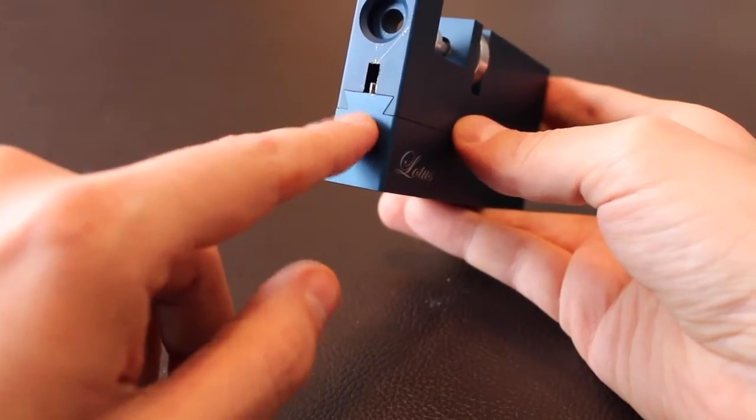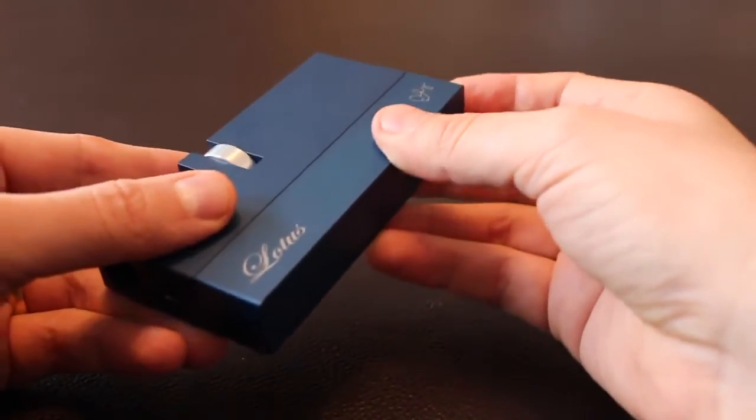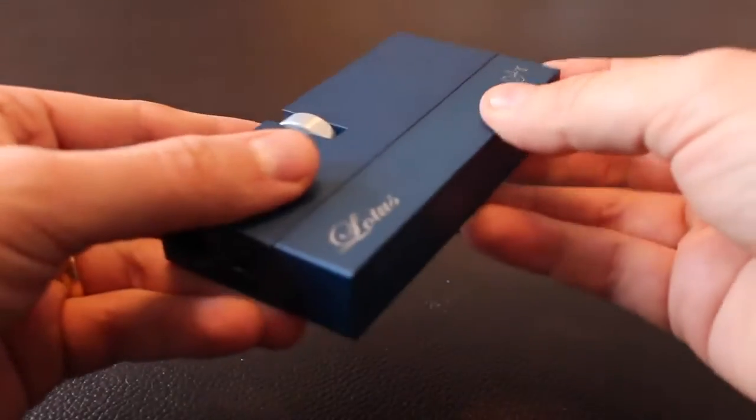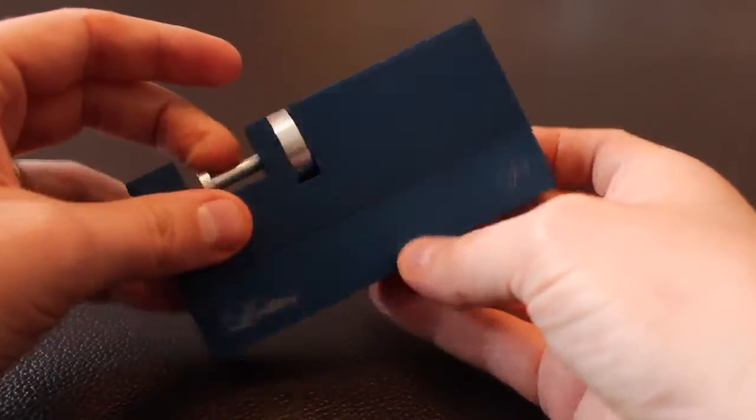And there's also a dovetail joint on the bottom of this puzzle. If you try to slide this bottom piece back and forth, it moves a little bit. Not enough that it slides off, but it moves just ever so slightly.